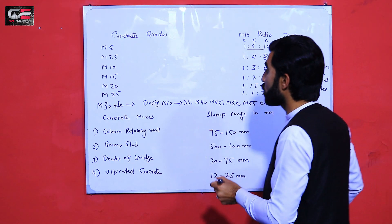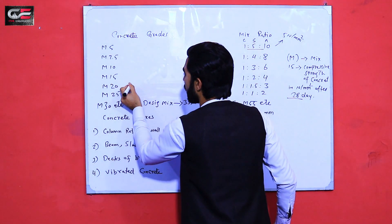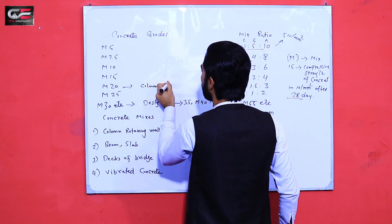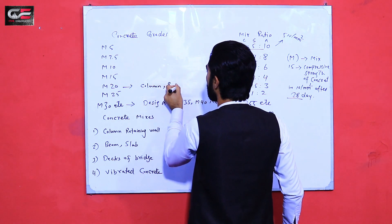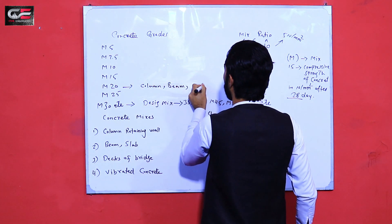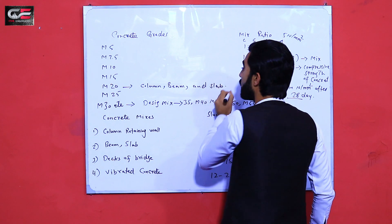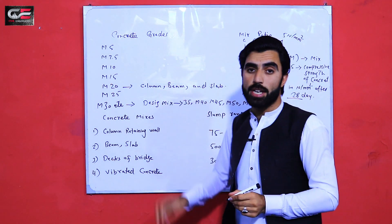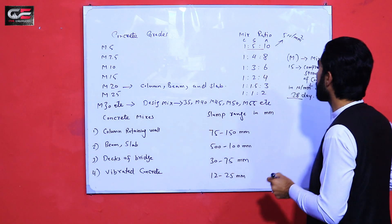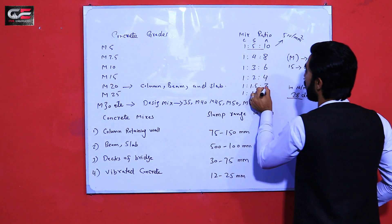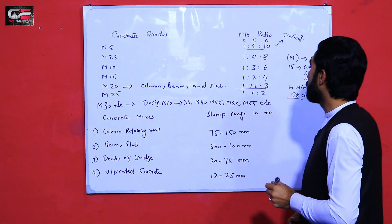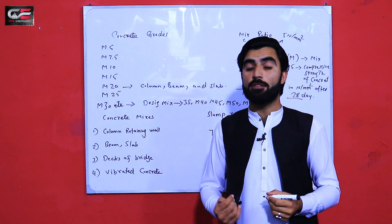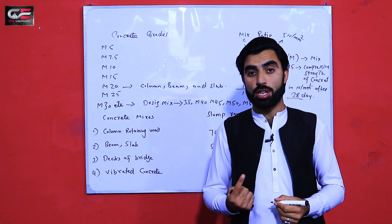Now, M20 grade of concrete should be used for columns, beams, and slabs — it gives good strength. Use minimum M20 grade concrete for beams, columns, and slabs, with a ratio of 1:1.5:3.